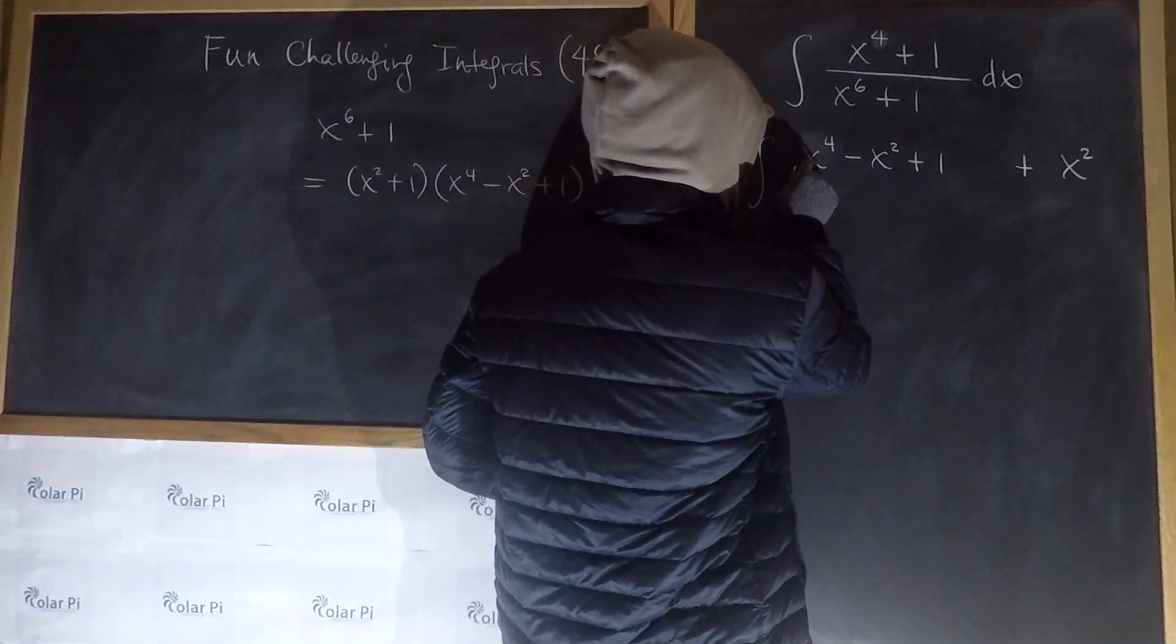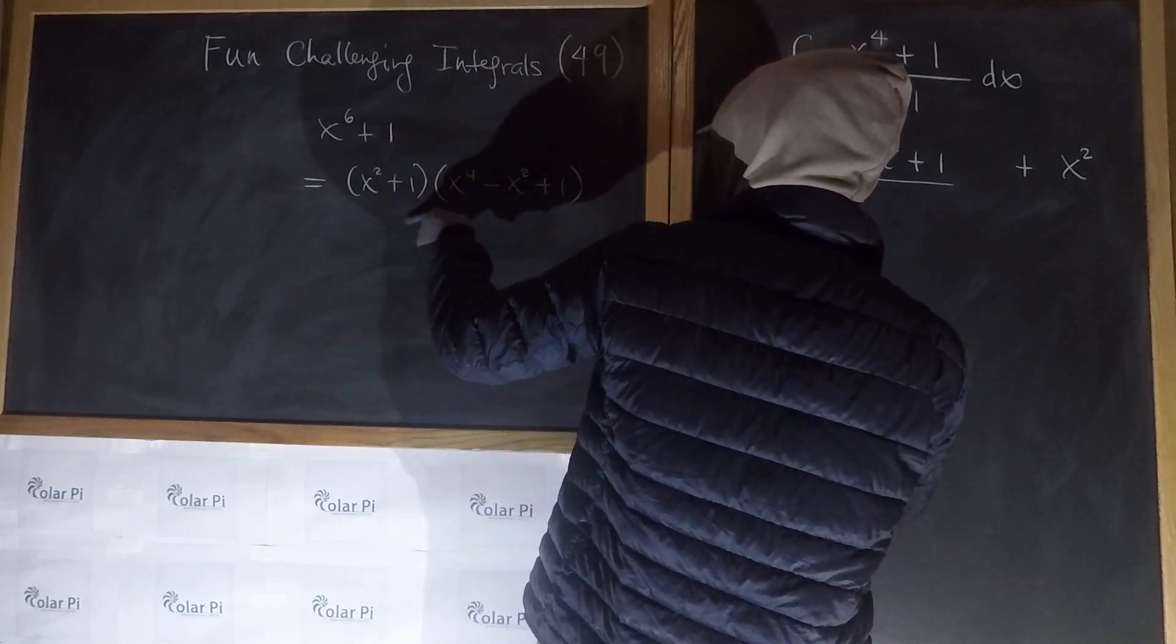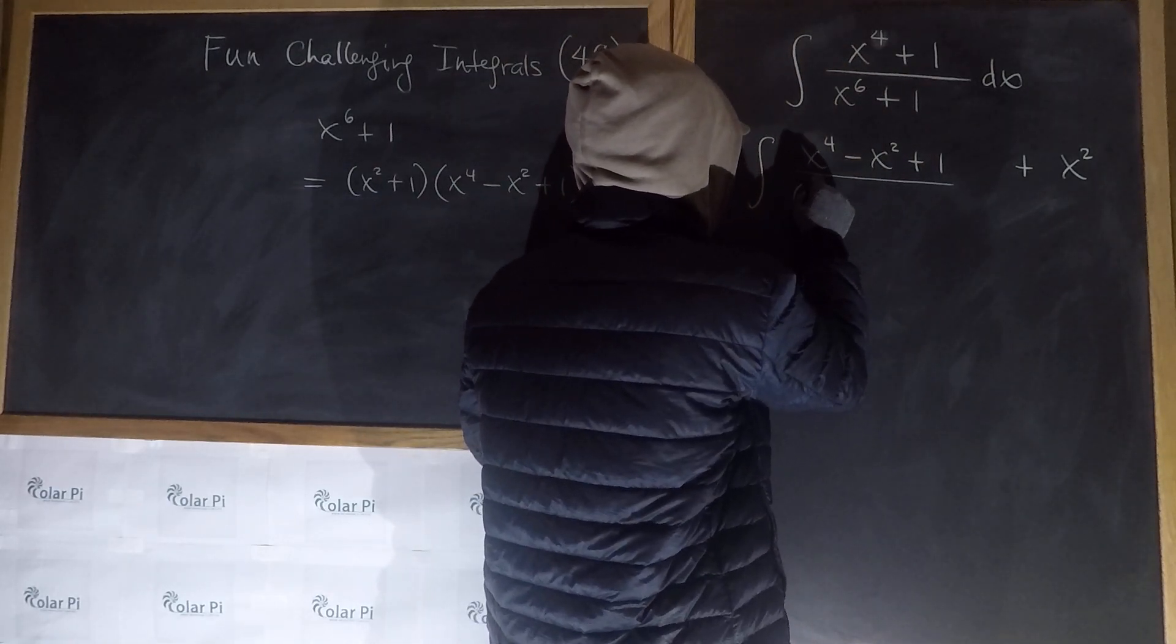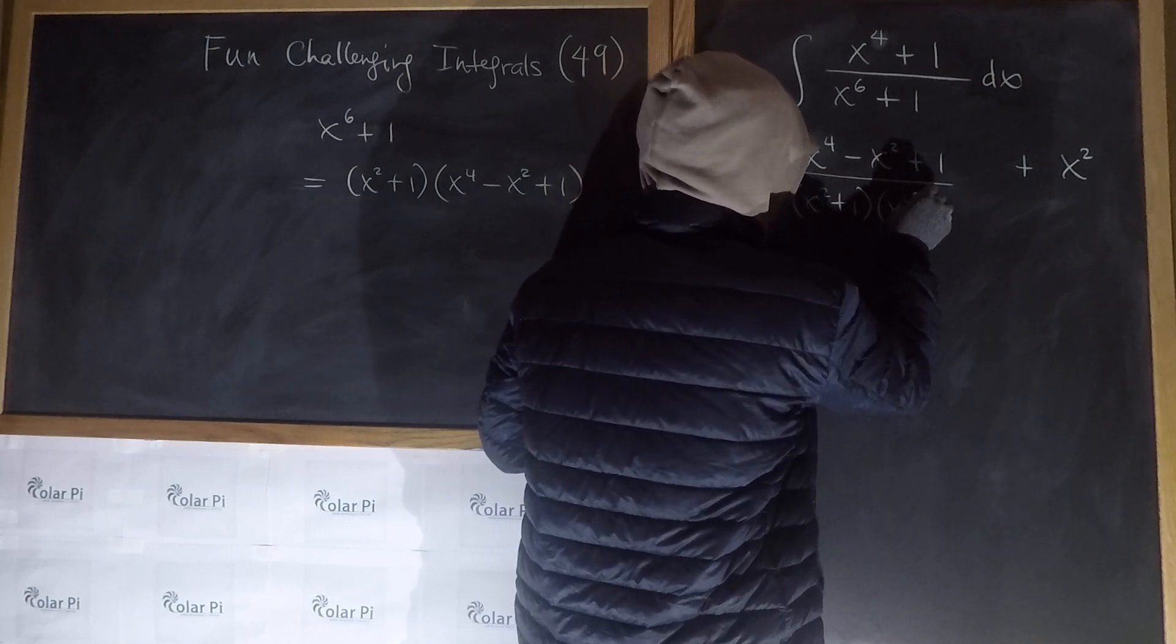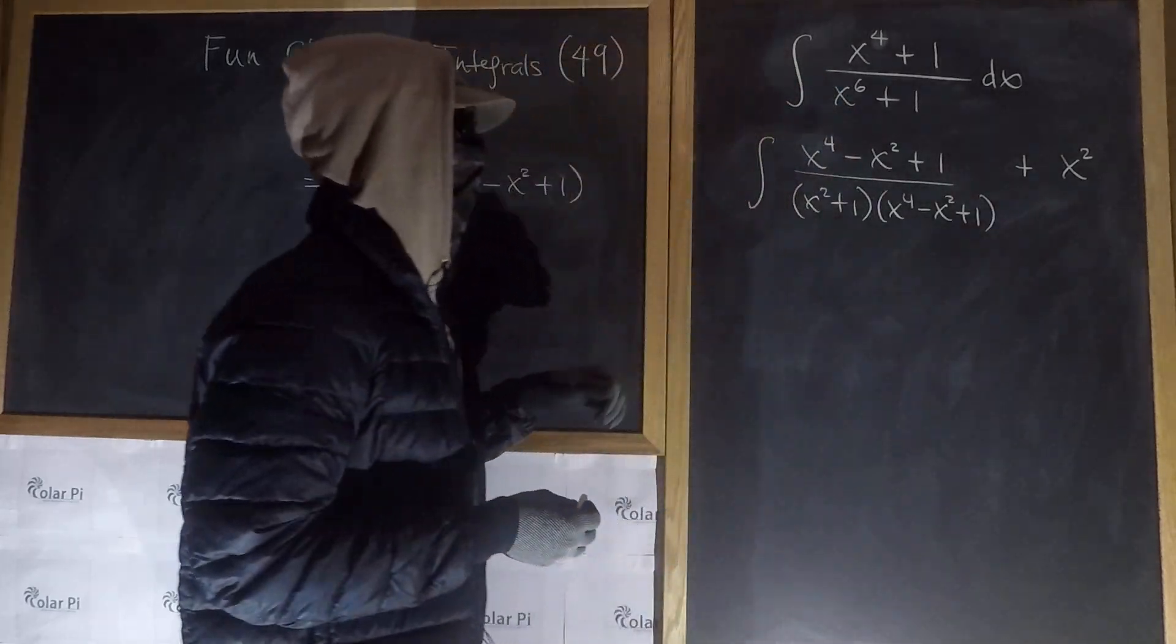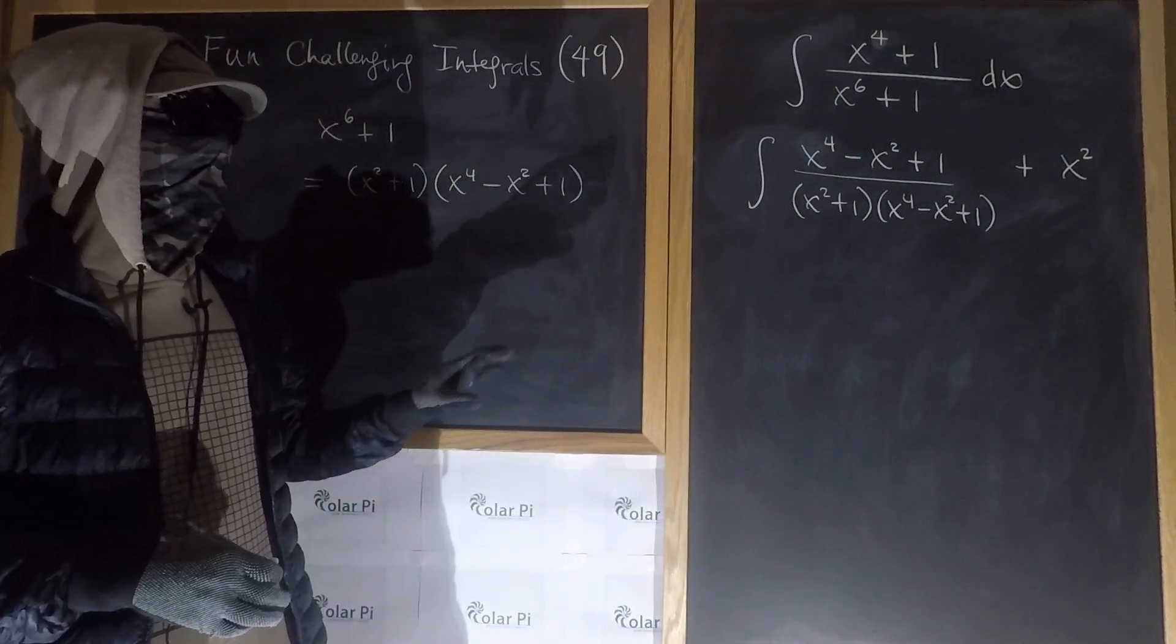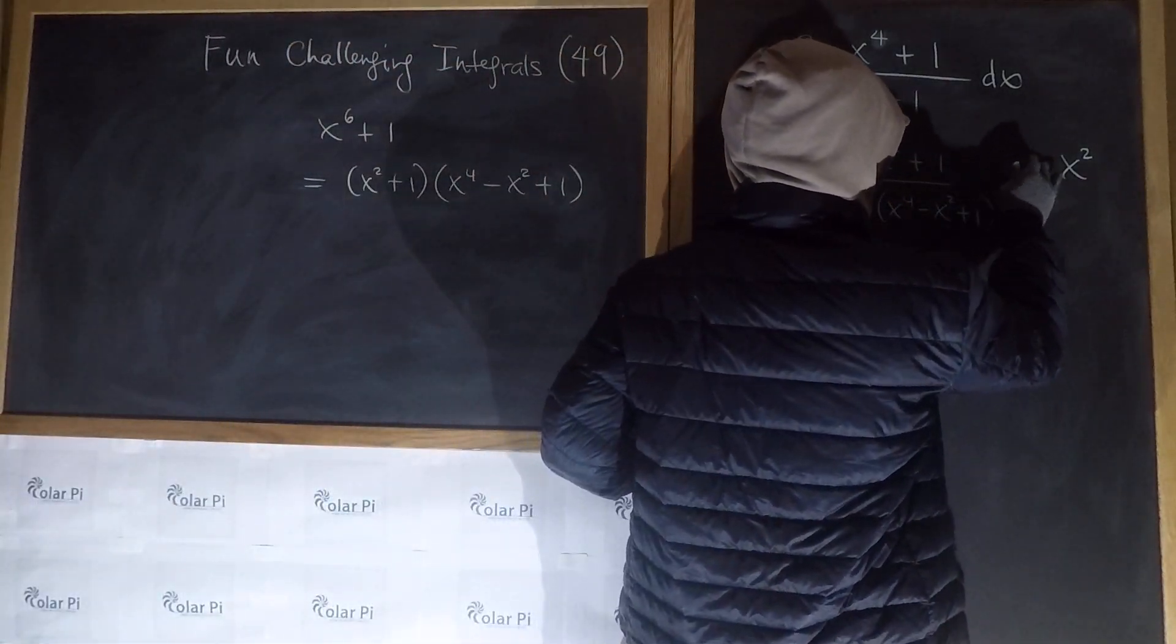Now, the denominator x to the 6th plus 1 is x squared plus 1 times x to the 4th minus x squared plus 1. And so we could make two integrals out of this.